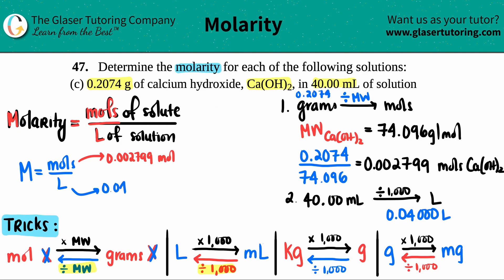Let's calculate molarity: 0.002799 divided by 0.04000. Molarity equals 0.002799 divided by 0.04000, which equals 0.06998. The unit for molarity is either capital M or mole over liter. They're both equivalent. That's it.